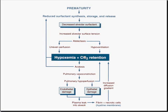In the pathophysiology of RDS, we really have a vicious cycle. We have things like prematurity interfering with the production of alveolar surfactant, therefore with inadequate expansion of the lungs, you have atelectasis, uneven perfusion, hypoventilation, creating hypoxemia and CO2 retention, which feed back to further reduce surfactant.